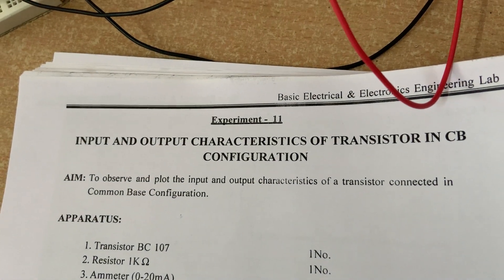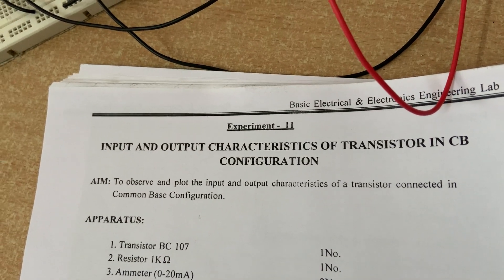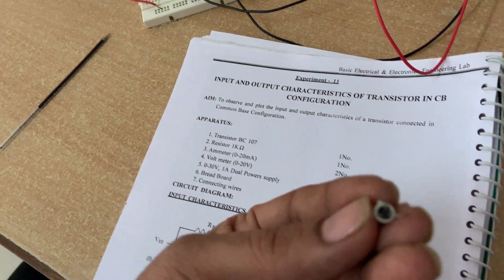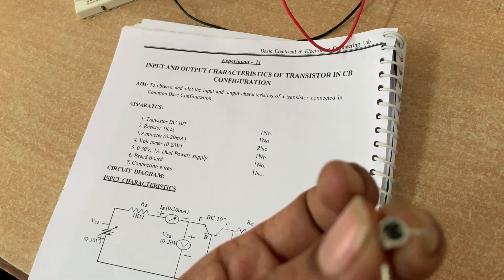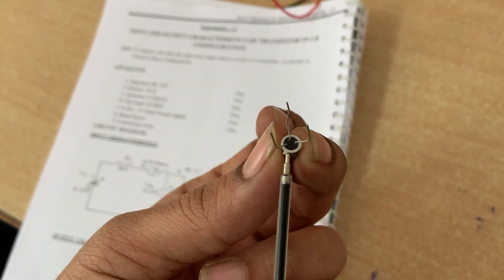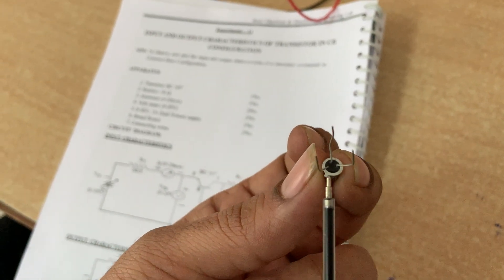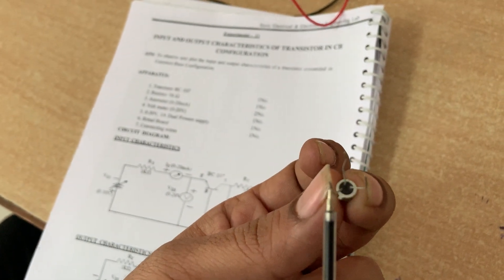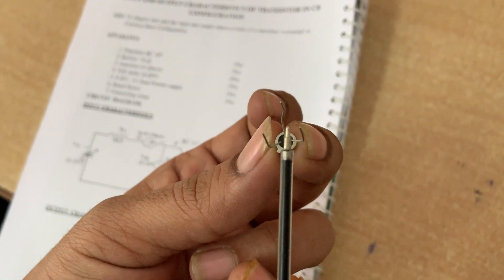Today we are going to discuss the input and output characteristics of a transistor in common base configuration. On this transistor, you can find a notch. The knob near the notch is the emitter, the knob far away from the notch is the collector, and the middle one is the base.